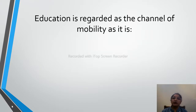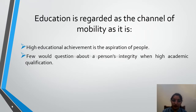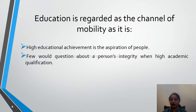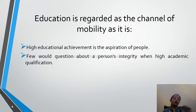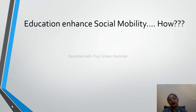Education is regarded as a channel of mobility. Higher education achievement is the aspiration of people — when people think of higher education, they increase their mobility. Fewer questions are raised about a person's integrity when their academic qualification is high. Education has a high relationship with income and occupation. The higher the education level, the more prestigious the occupation, leading to higher income.